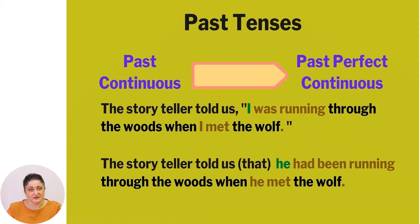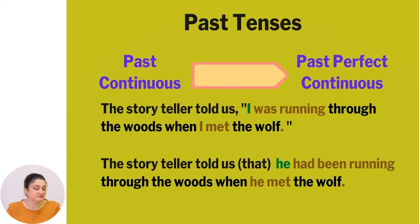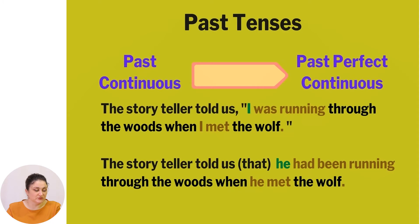Past continuous — we transform it into past perfect continuous. Example: 'The storyteller told us, I was running through the woods when I met the wolf.' The reported sentence: 'The storyteller told us he had been running through the woods when he met the wolf.' You can notice that 'was running', the past continuous verb form, was changed into 'had been running', past perfect continuous. Also, we changed the pronoun 'I' into 'he' because the storyteller told us.